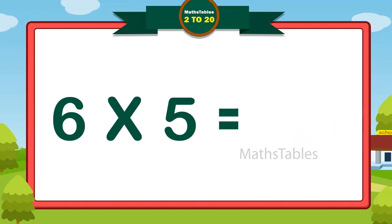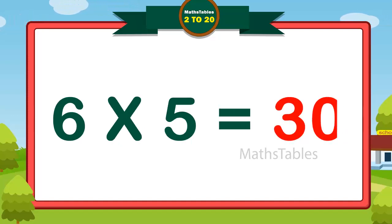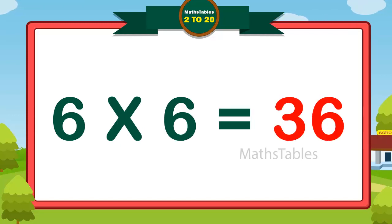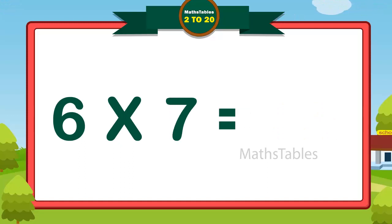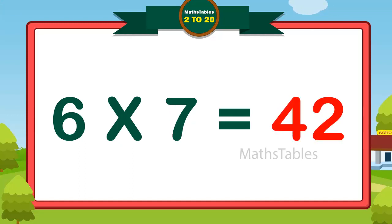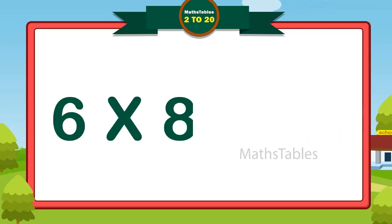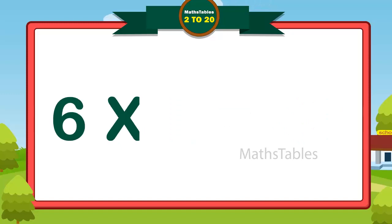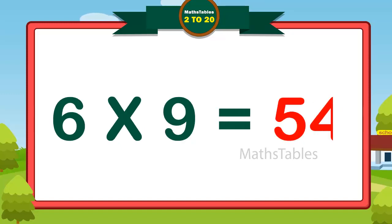Six fives are thirty. Six six are thirty-six. Six sevens are forty-two. Six eights are forty-eight. Six nines are fifty-four.